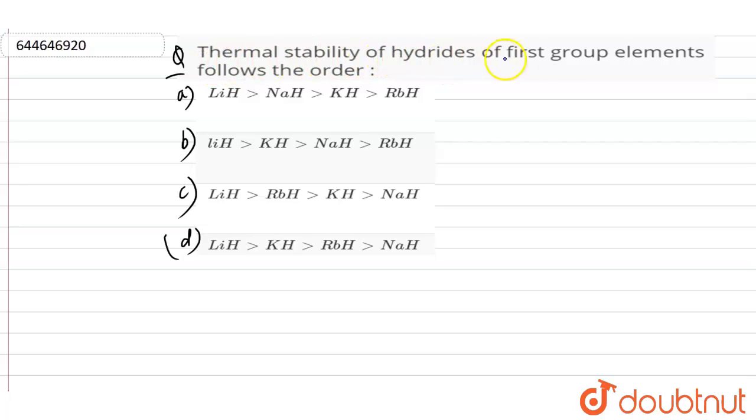Thermal stability of hydrides of first group elements follows the order. Group 1 elements: lithium, sodium, potassium, rubidium, cesium, francium.